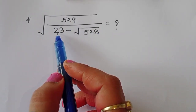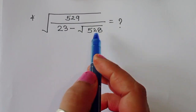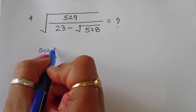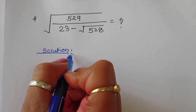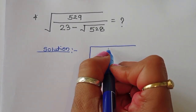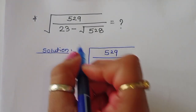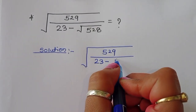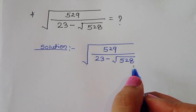We have to find the value of √529 divided by (23 minus √528). Let's see the solution: square root of 529 divided by 23 minus square root of 528.